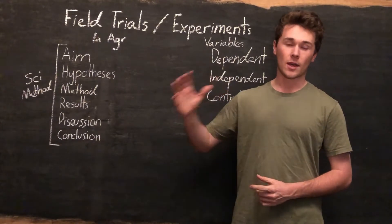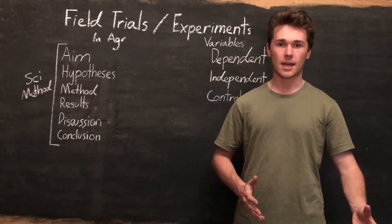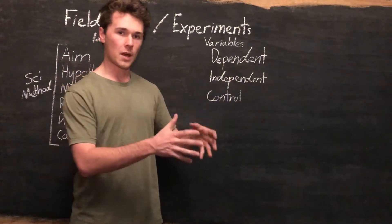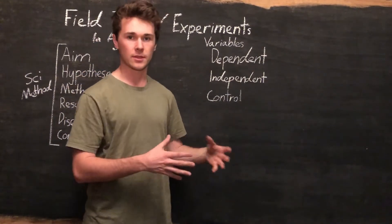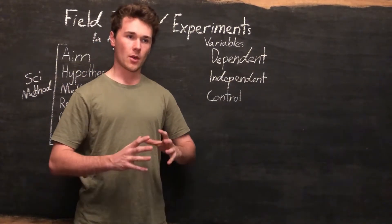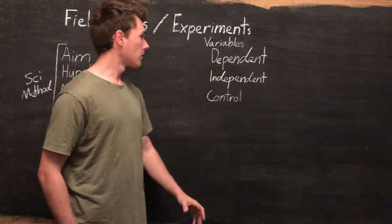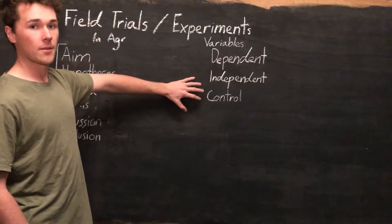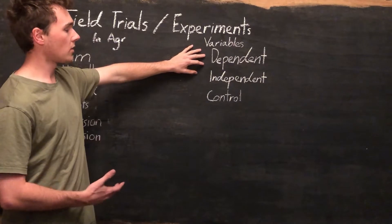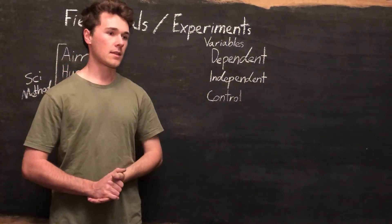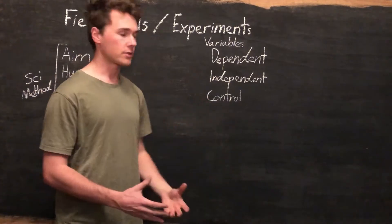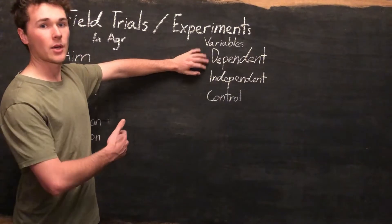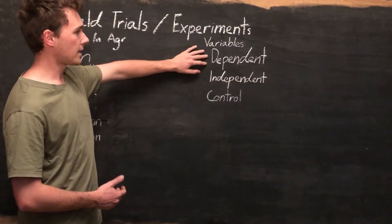I applied it to half of our seeds and the other half we left as a control. We're testing one variable — in this case it's a product — and we only want to be testing that one variable. When we talk about variables, we have dependent, independent, and control variables. The dependent variable is affected by the independent variable.